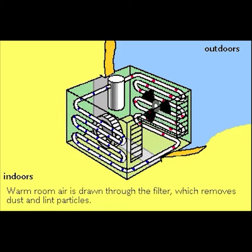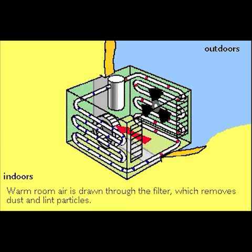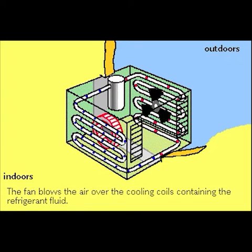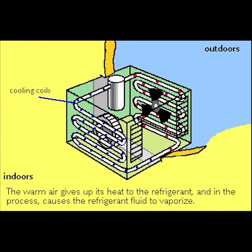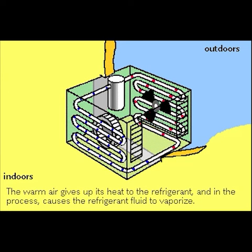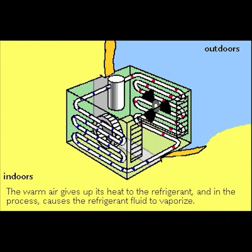Warm room air is drawn through a dust filter by a fan, then blown over the cooling coils, which circulate the refrigerant in its liquid state. As the room air flows by the coils, it causes the liquid in the coils to evaporate, and in the process, heat is absorbed by the refrigerant as it turns to gas.